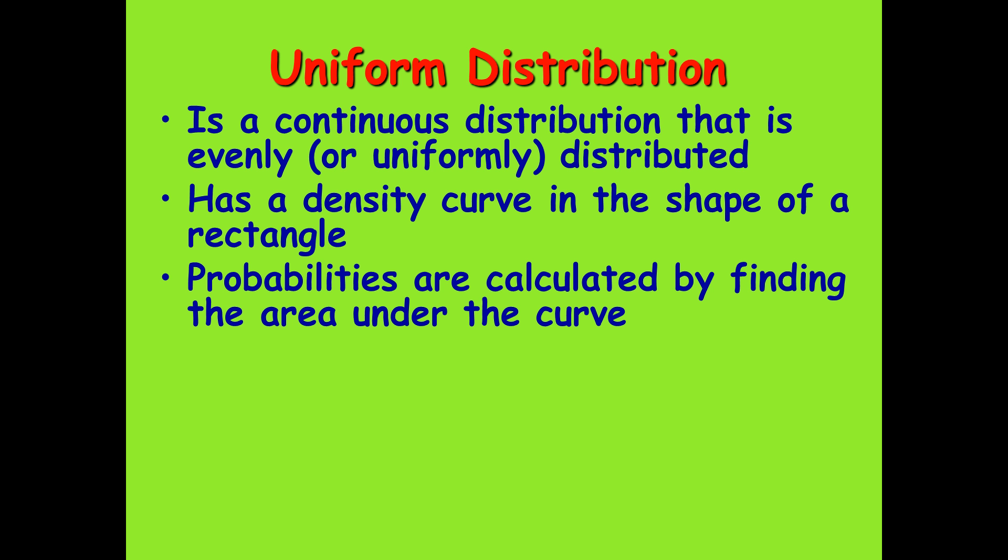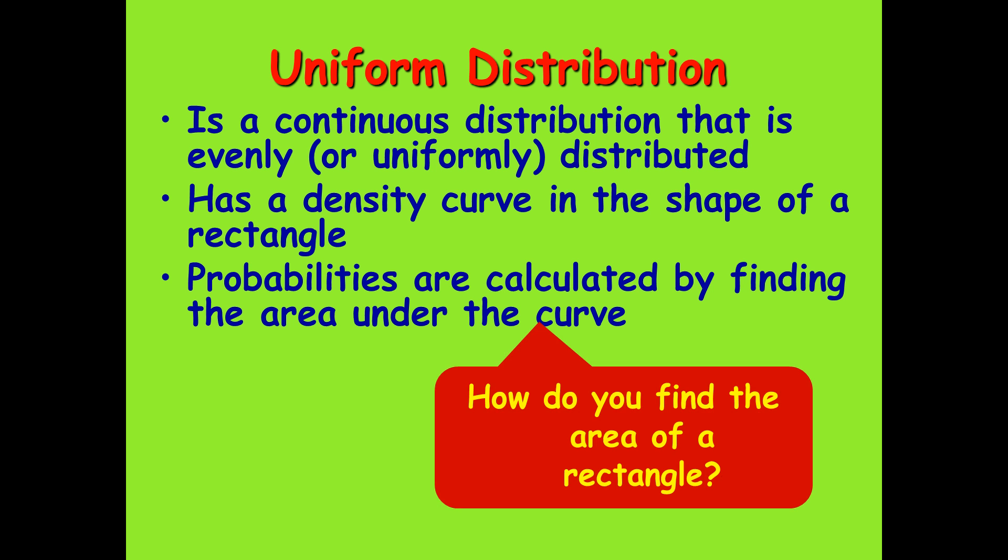Now this first step is something you already know. Again, in density curves, probabilities are calculated by finding the area under the curve. But remember, a uniform distribution is simply a density curve in the shape of a rectangle. So let's move on.